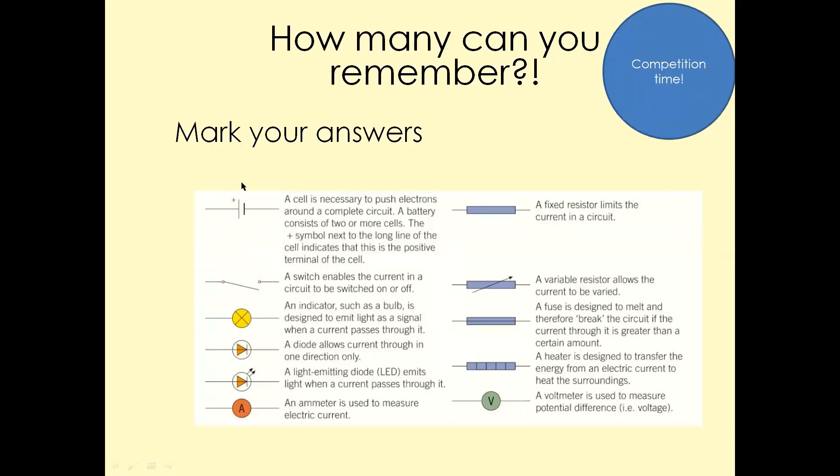Battery is two or more cells combined together makes a battery. This one is the symbol for a switch, an open switch. The switch enables the current in a circuit to be switched on or switched off. That one is a symbol for bulb or filament lamp. The function is it just emits light.